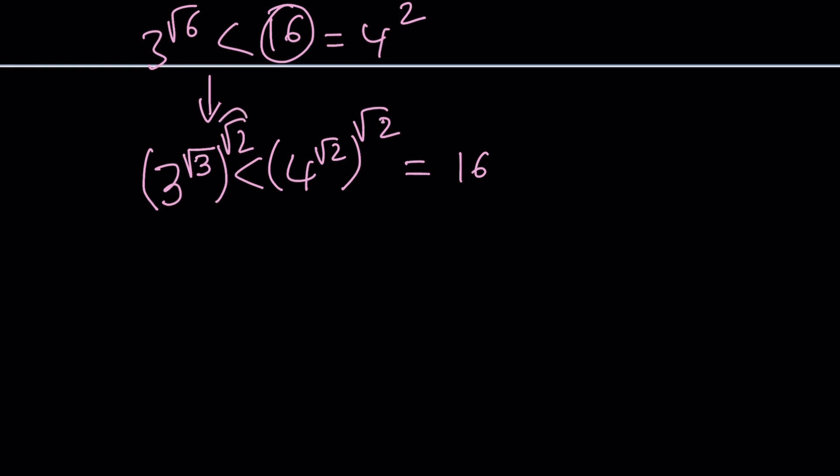So now what do we have? We have square root of 2. Let's raise both sides to the power 1 over root 2. That gives us 3 to the power root 3 is less than 4 to the power root 2. So the winner is 4 to the power root 2. That's the larger number. Yay!